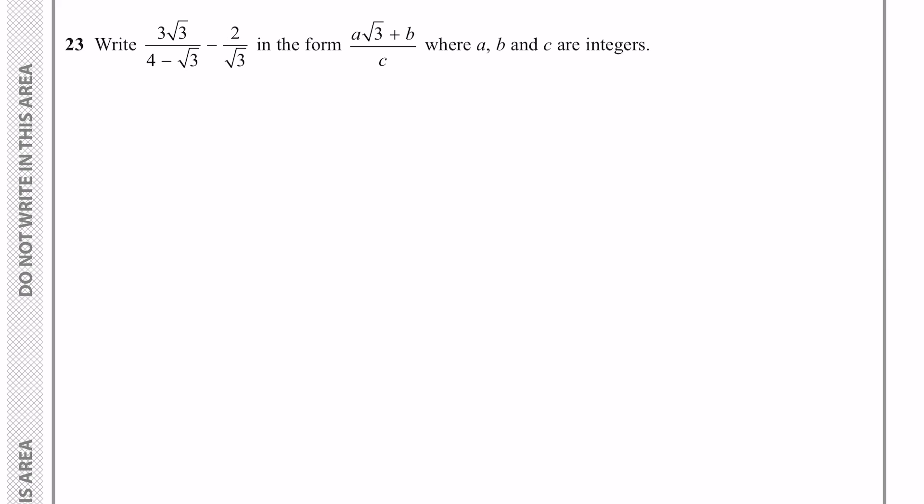Here we have some fractions with surds and they ask us to write it in the form A√3 plus B over C where A, B and C are integers.